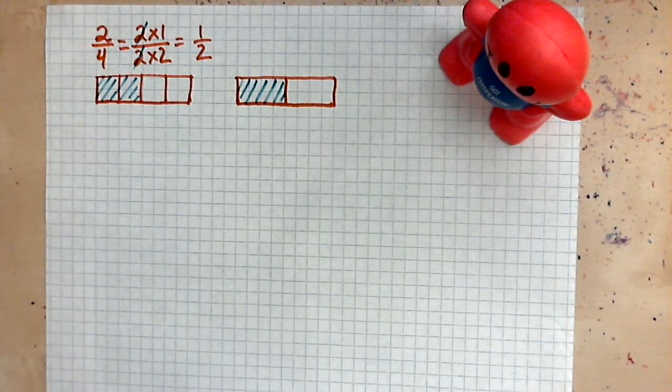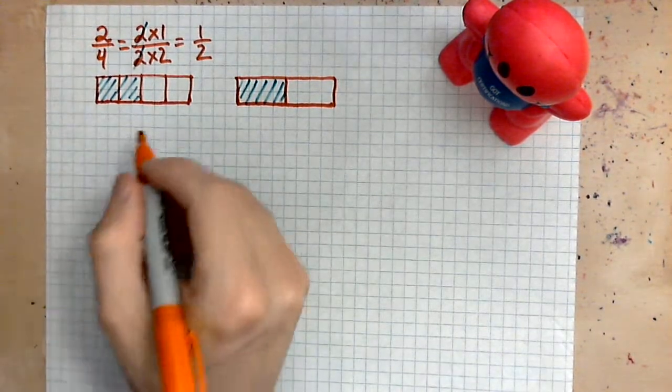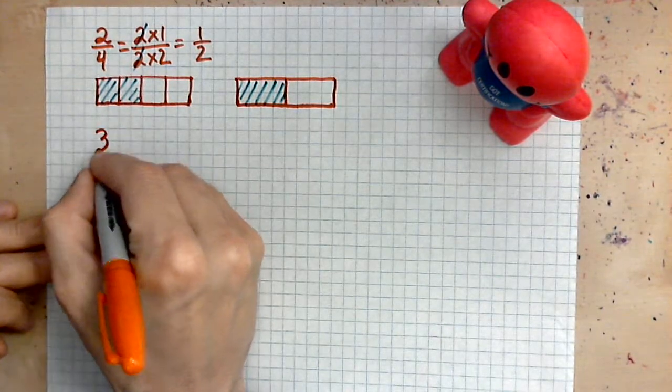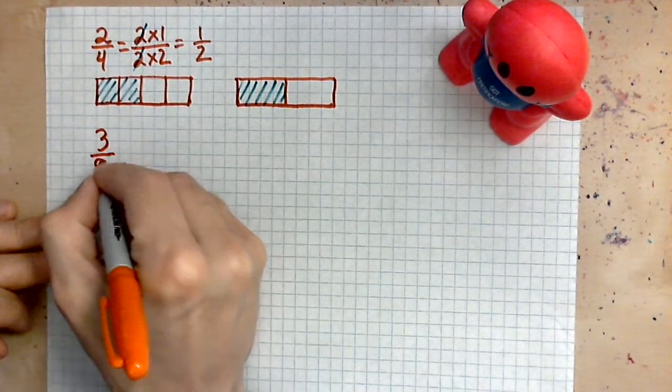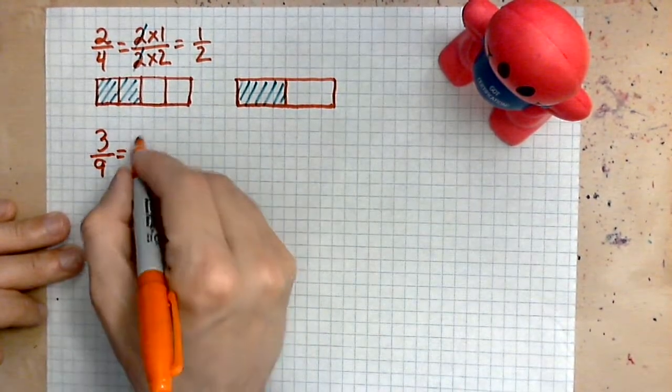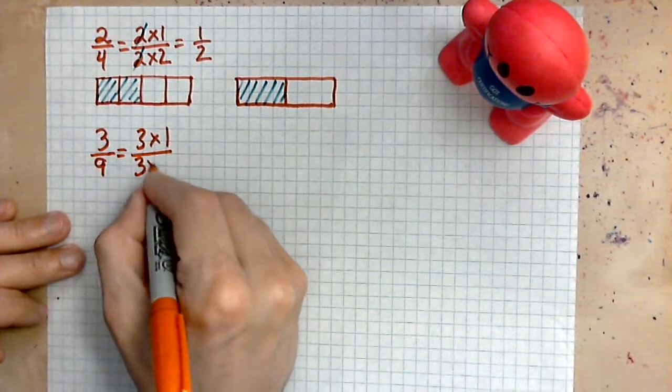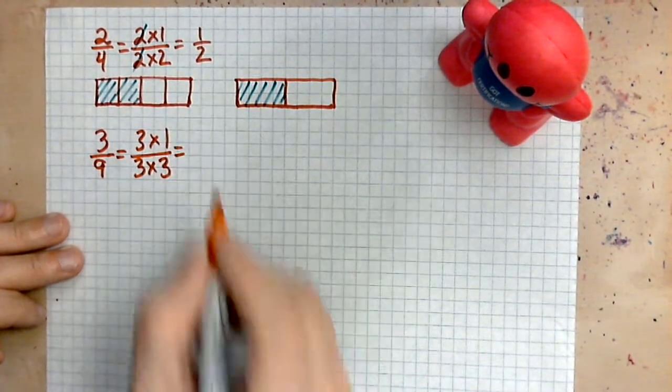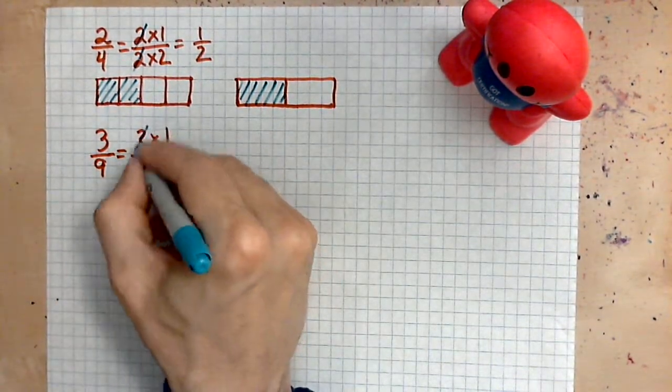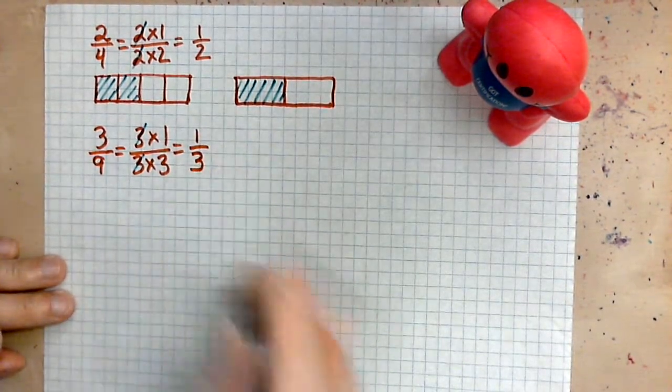Let's take a look at another example. How about we do 3 out of 9? So say we have 3 out of 9. And we are going to reduce this. So we write the top as 3 times 1 and the bottom as 3 times 3. And the first thing to observe is that 3's cancel very nicely. And all that remains is 1 out of 3.